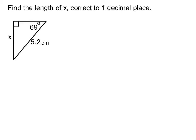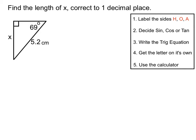Here's a triangle — we're asked to find the length of x correct to one decimal place. We're going to label the sides: hypotenuse, opposite and adjacent. The hypotenuse is the longest side, so that's our 5.2. The opposite side from the 69 degrees is x, and the one we haven't used yet is the adjacent side.